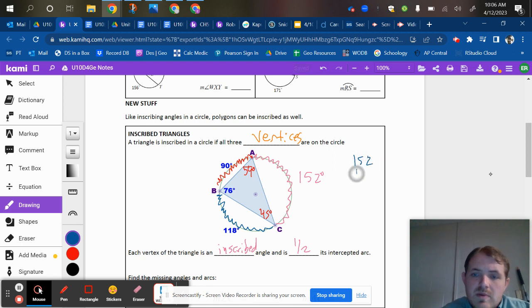152 plus 118 plus 90, all equals 360 degrees. So when you have an inscribed triangle, you can actually figure out all of those arcs and all of those angles.